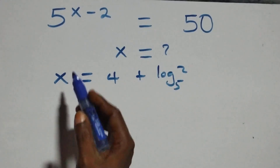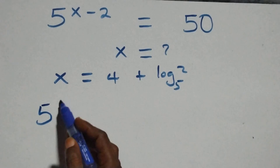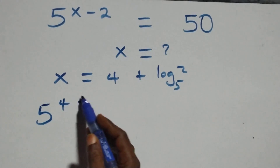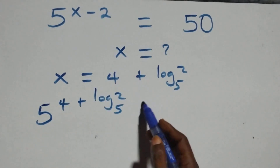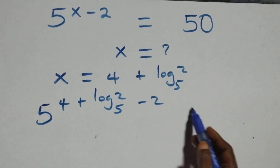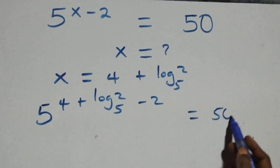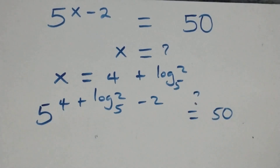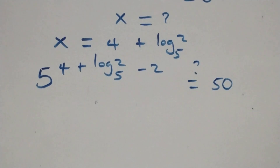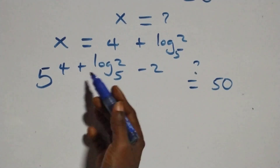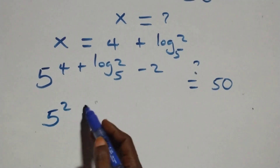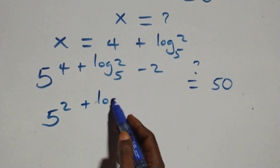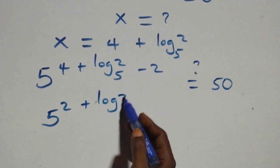Then what we have here becomes 5 raised to the power of 4 plus log 2 base 5, minus 2, is this equal to 50 on this side? Here we have 4 minus 2, that is 2, and we write it as 5 raised to the power 2 plus log 2 base 5.